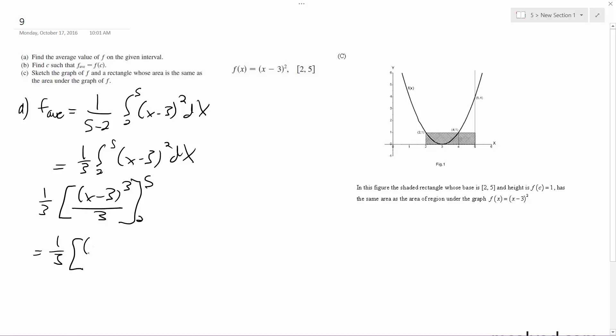Third, five minus three cubed over three, minus two minus three cubed over three. And we get one third times eight.